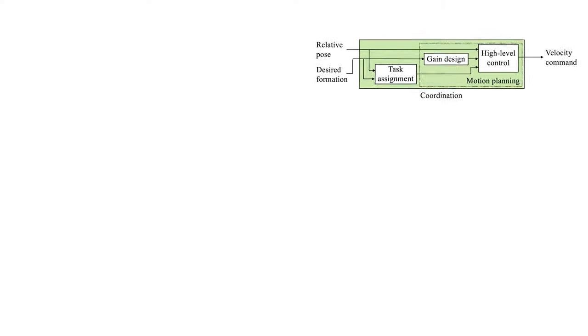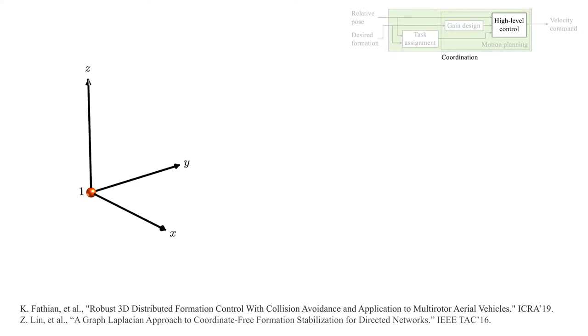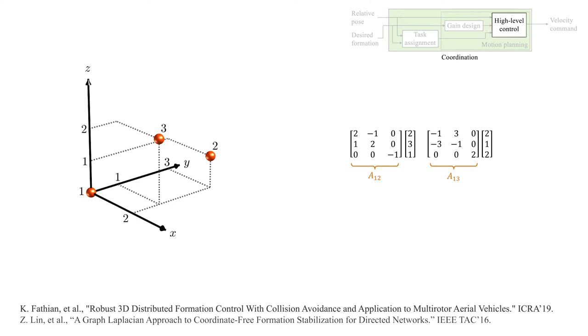Our motion planner, based on our previous work, uses barycentric formation control. Each vehicle constructs relative position vectors to each of its neighbors in its own body frame. These vectors are then rotated and scaled by constant matrices determined by the desired formation. Each vehicle then moves along the sum of these vectors into the desired formation.